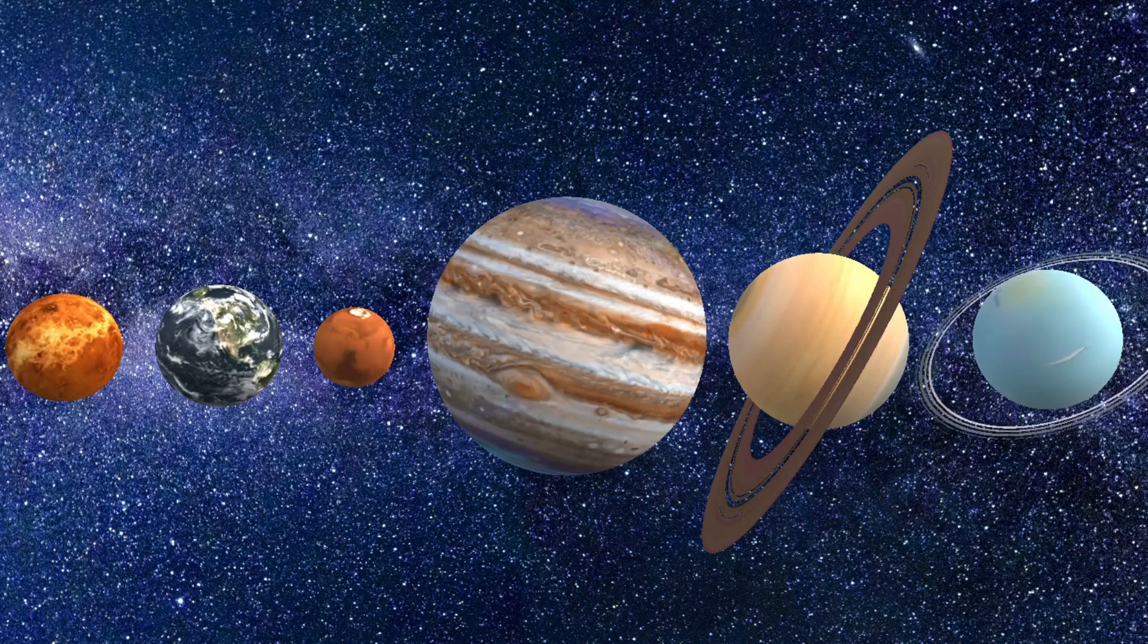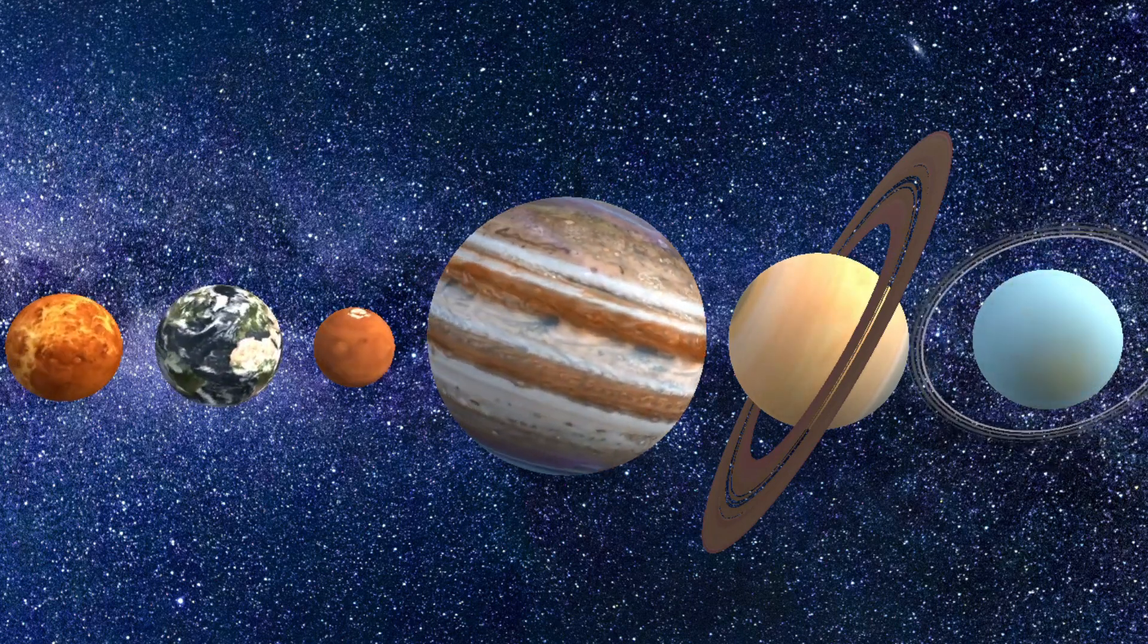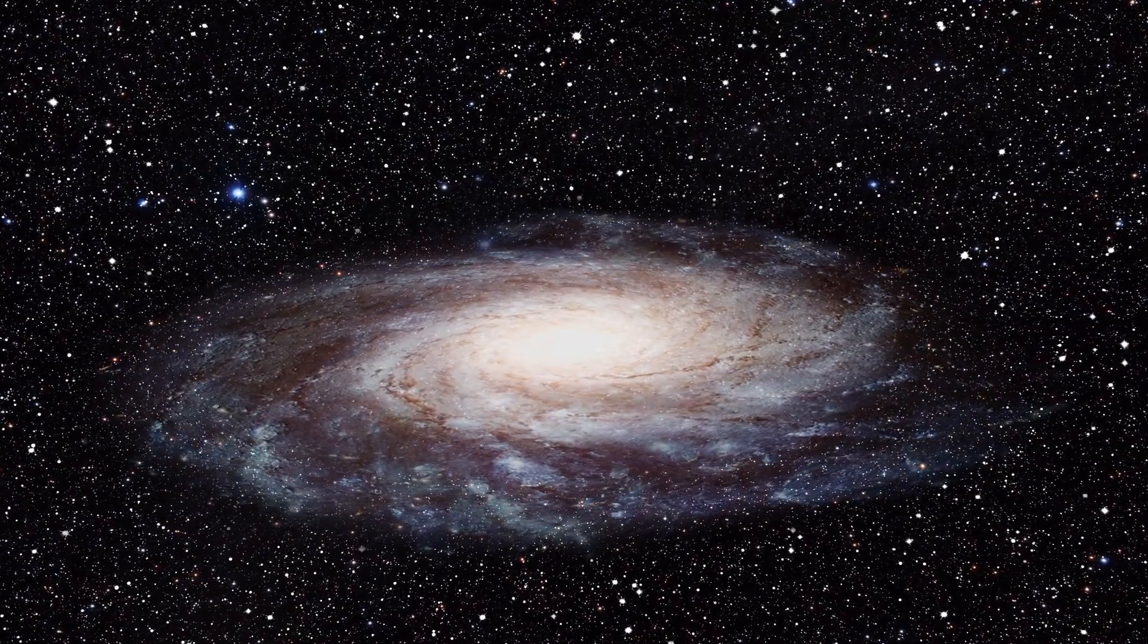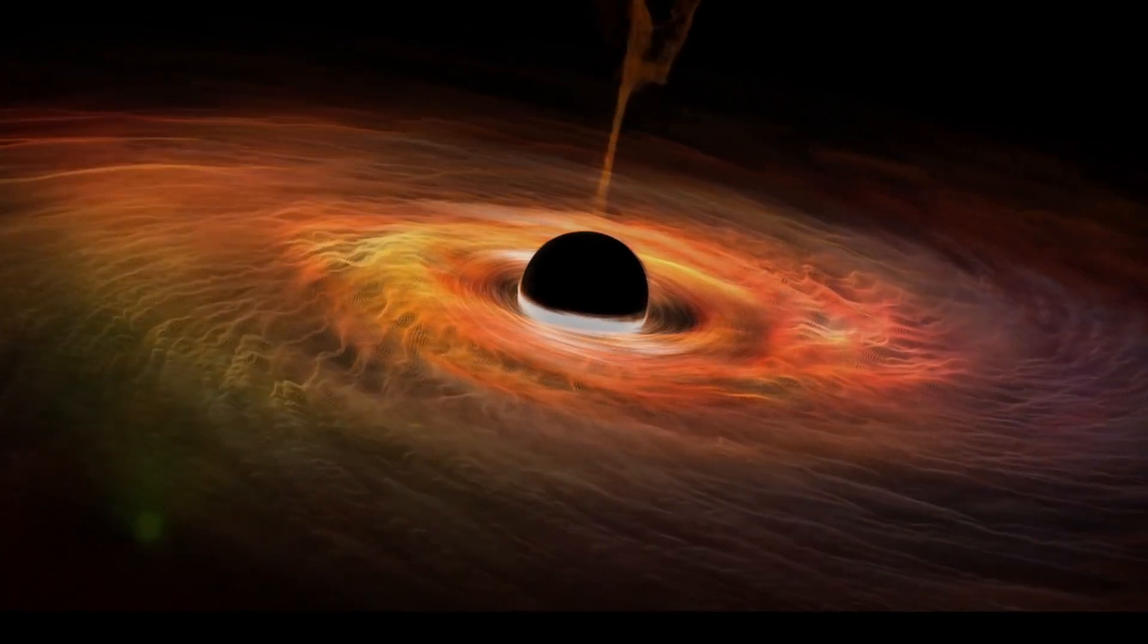Almost all the celestial objects spin on their axis. For example, all the planets, satellites, stars and even the galaxies spin. But what makes the spinning of black holes special is their incredibly high speed of rotation that almost approaches the limit of maximum possible speed, the speed of light. But now, the question arises. What causes these immensely massive black holes spin so fast?